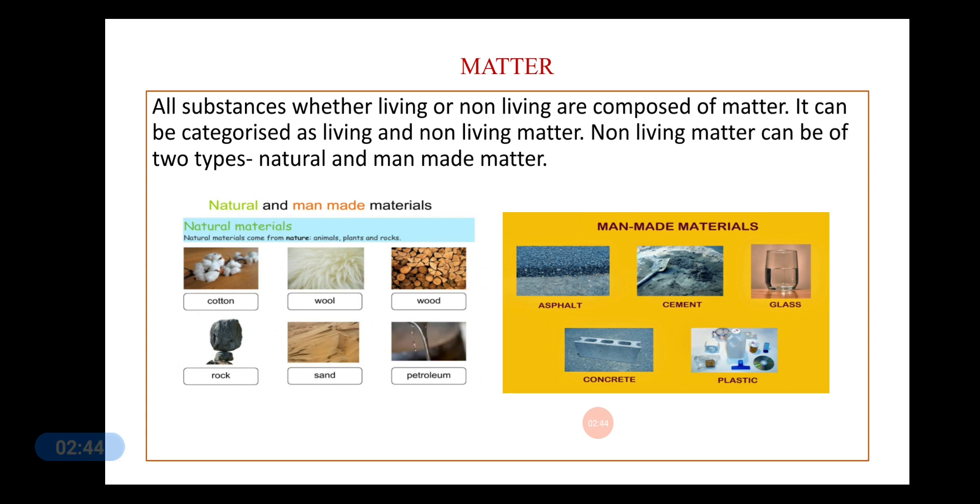So, natural matter occurs in nature. And, more useful substances can be made out of that. Like the wood, coal, silk, water, etc. Whereas, man-made matter is artificially prepared from natural matter. Like the soaps, the detergents, medicines, plastics, etc.